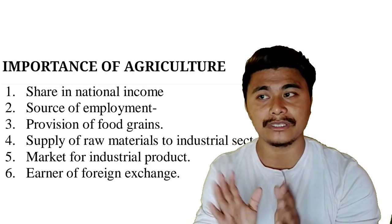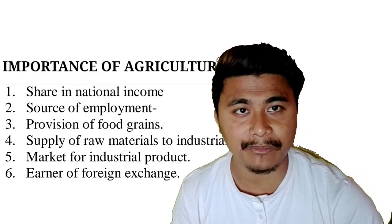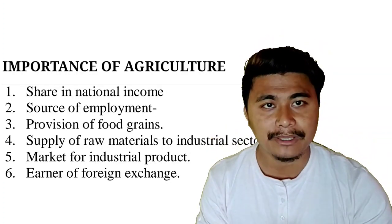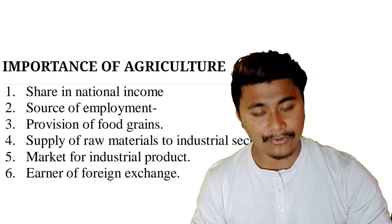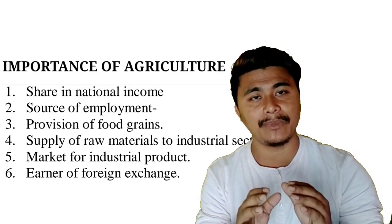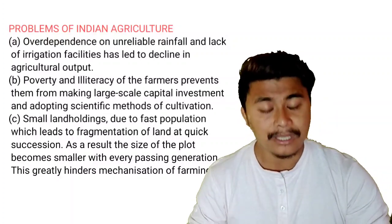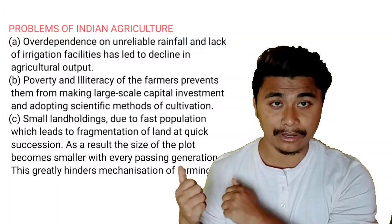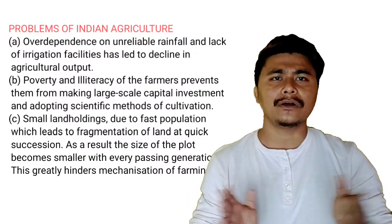Agriculture also serves as a market for industrial products. In order for industries to grow, their products need to be sold, and two-thirds of India's population lives in rural India. If their purchasing power is lifted, agriculture must improve, which in turn creates a market for industrial products. Additionally, almost 16 percent of foreign exchange comes from the export of agricultural goods. However, there are some major problems related to Indian agriculture, such as over-dependence on an unreliable monsoon and lack of irrigation facilities.